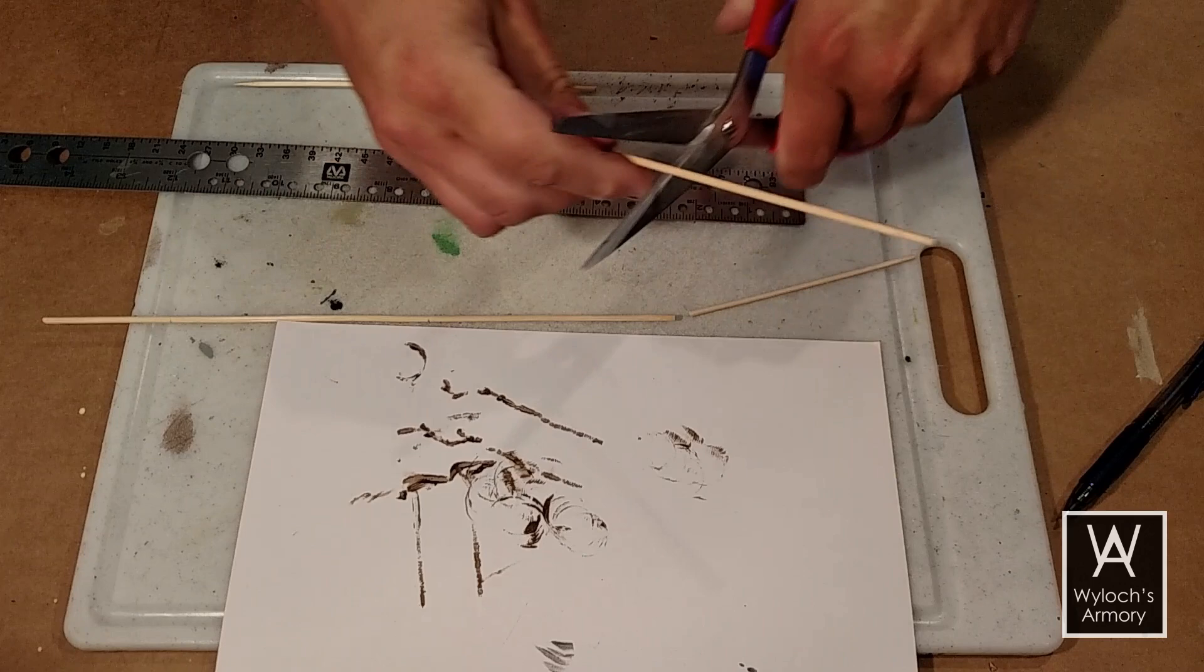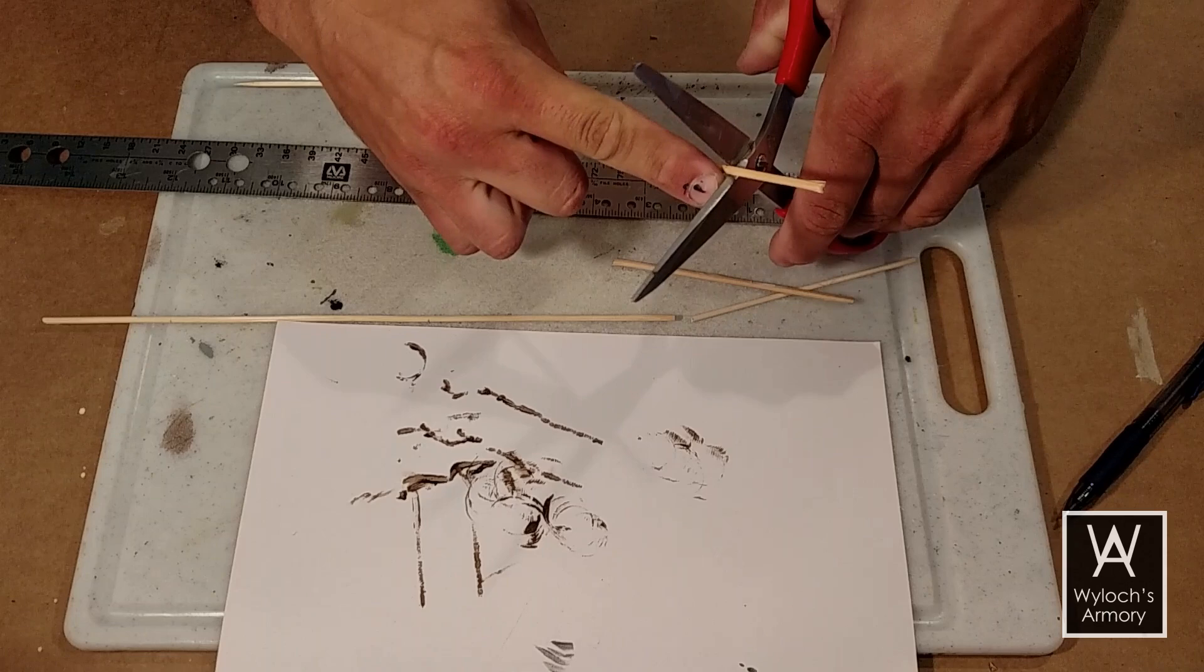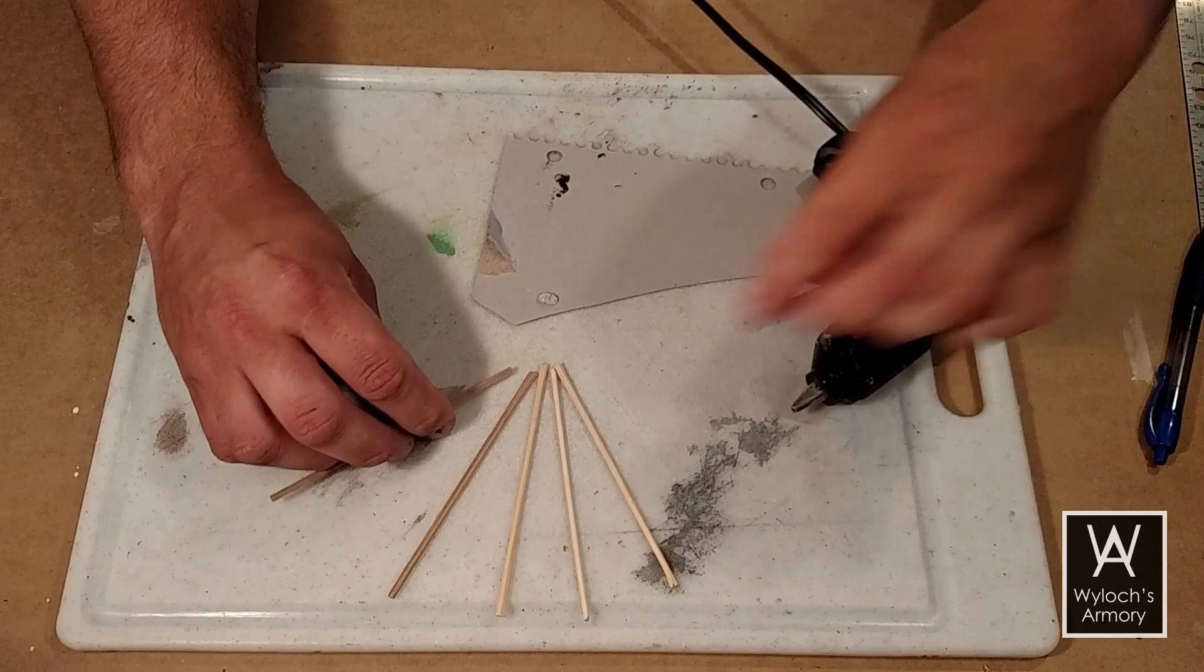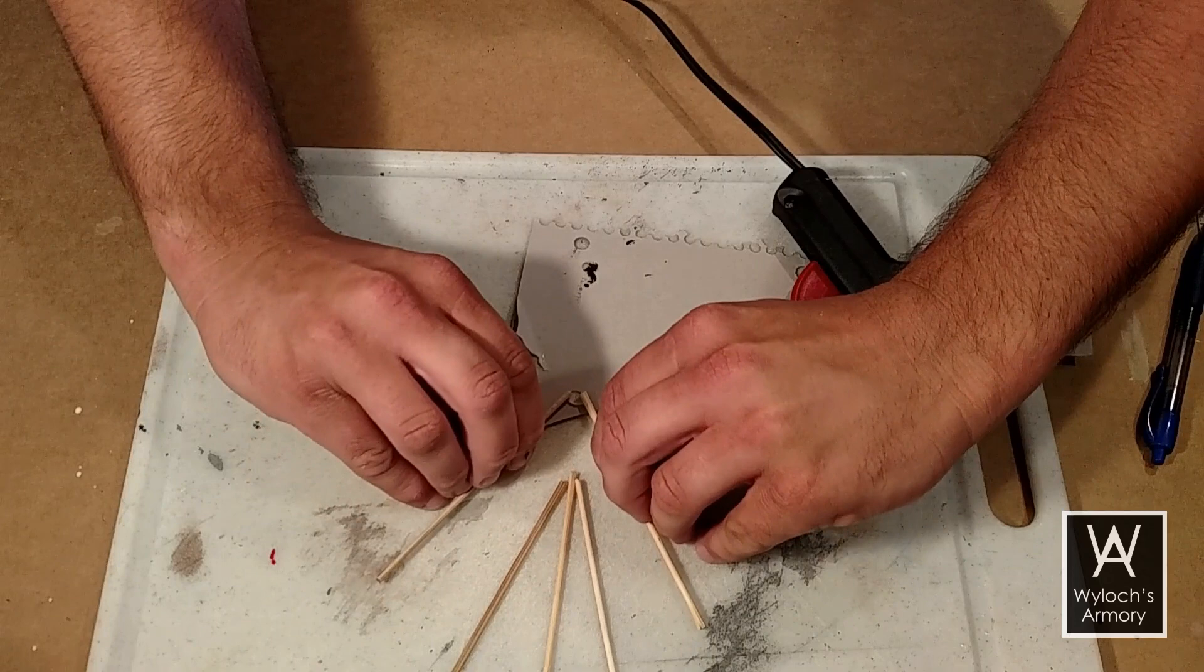Now let's get started on the sails. Cut up some more kebab skewers. You're going to need five pieces, all of them four and a half inches long. Apply a blob of hot glue to some chipboard. Take two of the posts and stick them in in a V shape, about a 60 degree angle, as you see here.